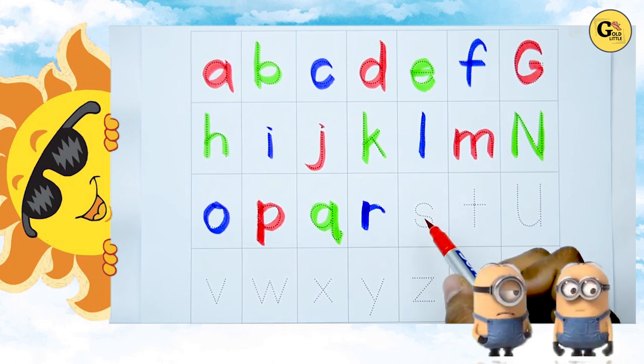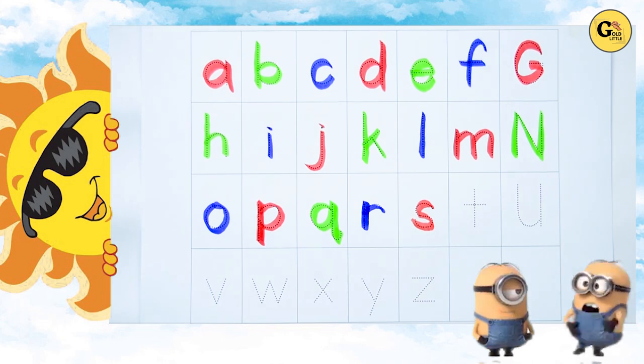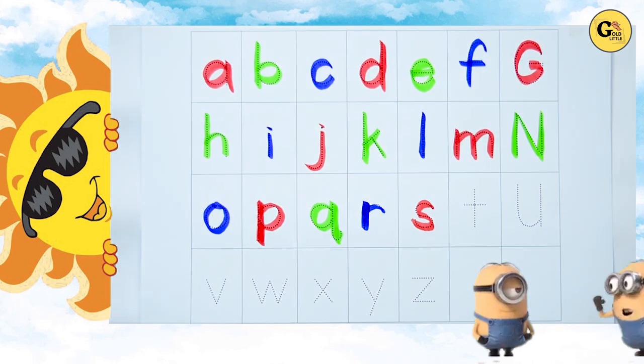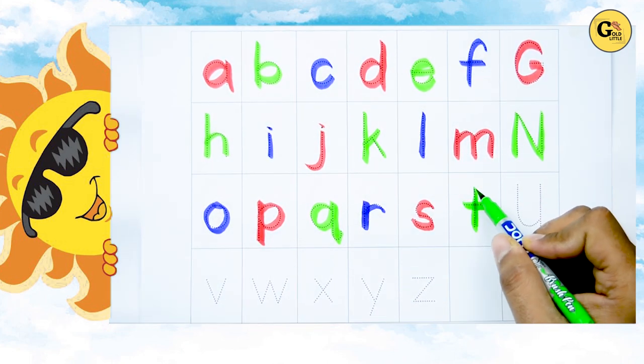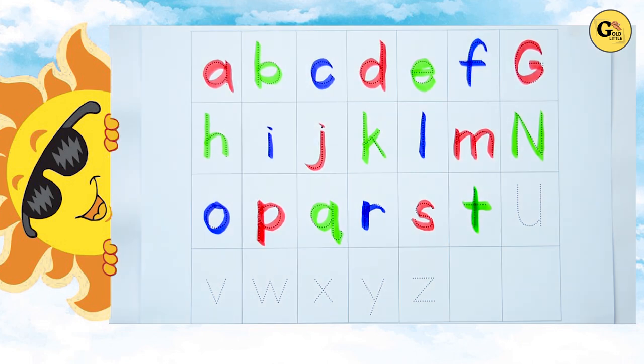Now it's S. Small s. S for sun. T. T. T for tiger. Yes. T for tiger.